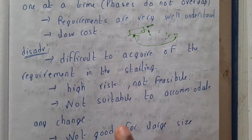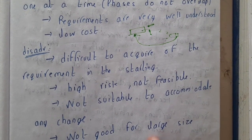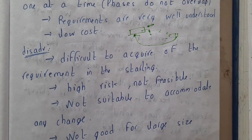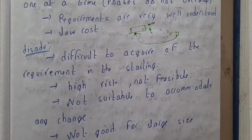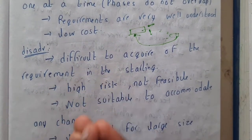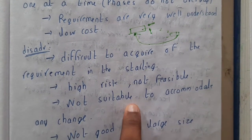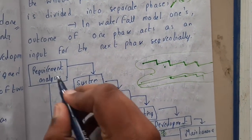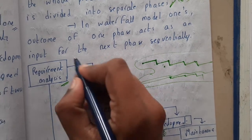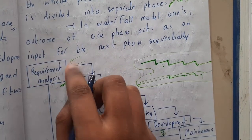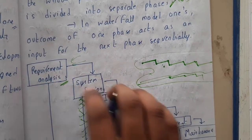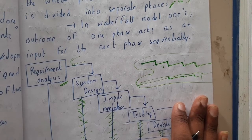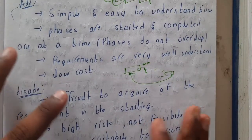The waterfall model is not suitable for accommodating changes. If a client requests a new feature during testing, the team must wait until maintenance, then restart the entire cycle. It is also not good for large projects — for example, building a Learning Management System could leave you stuck in requirement gathering alone for months.